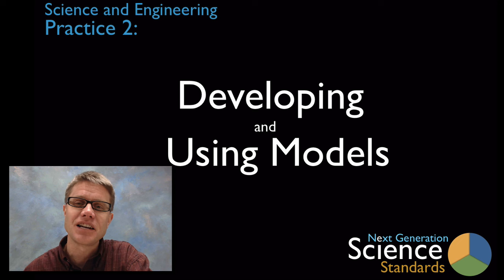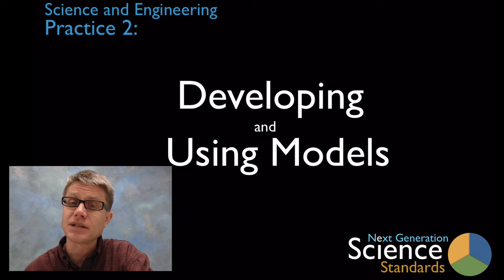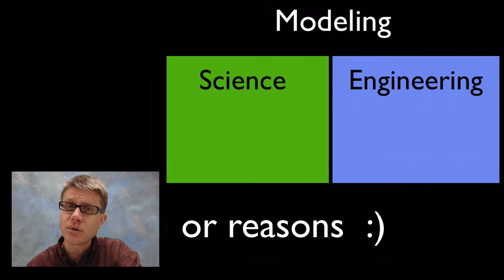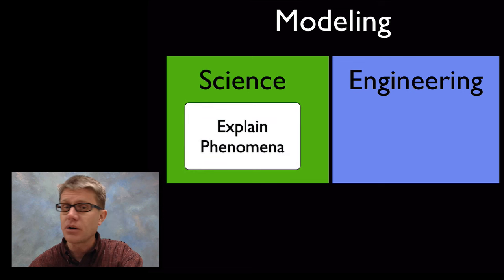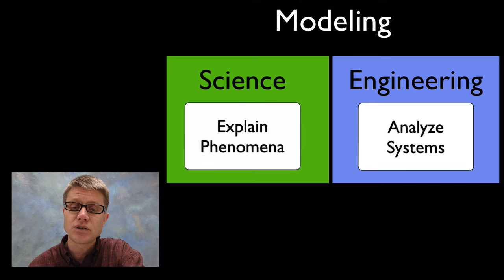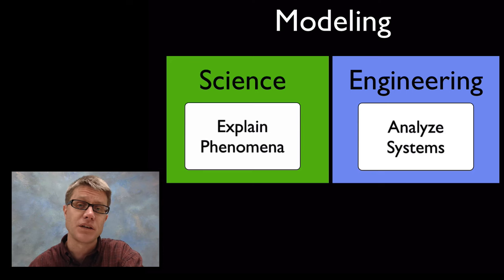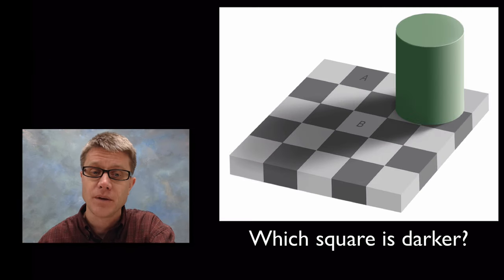Hi. It's Paul Anderson and this is Science and Engineering Practice Two: developing and using models. Models are important in science and engineering in a couple of different ways. In science we use models and modeling to explain phenomena or to share an understanding of how the world works. In engineering we use it to analyze systems, and lots of times we'll do simulations or build models to see how a design is going to perform.